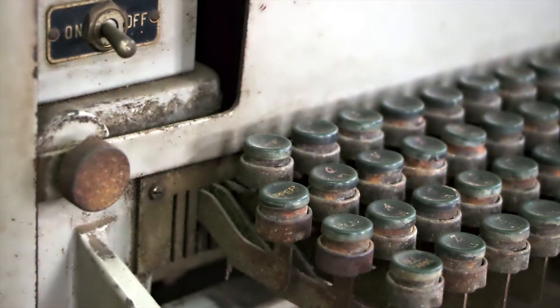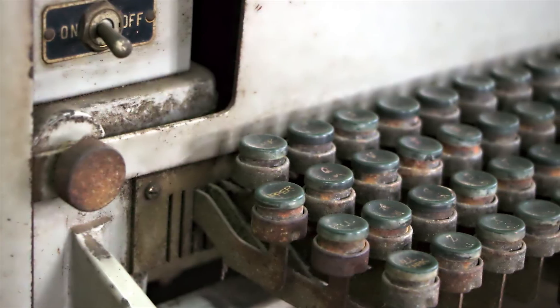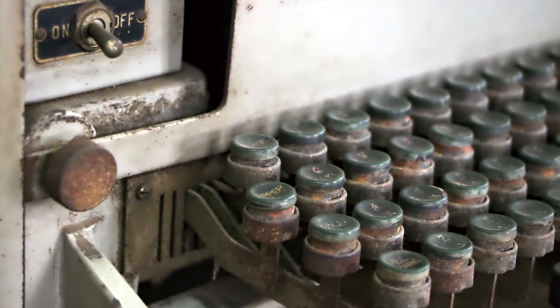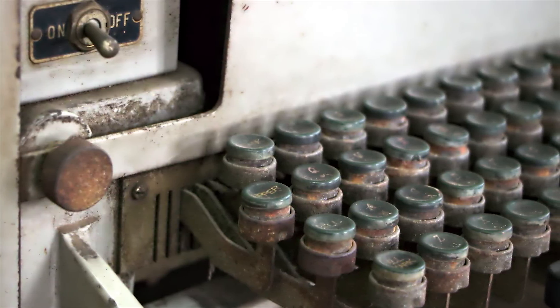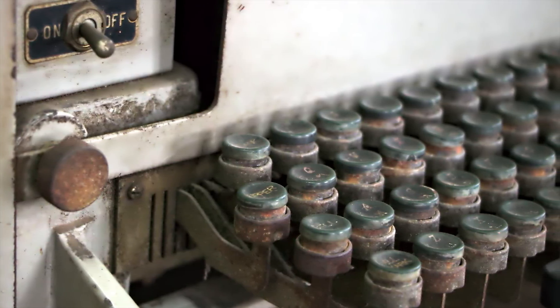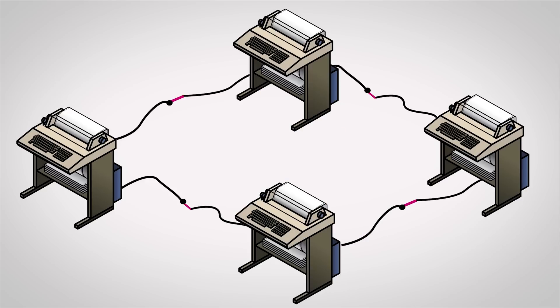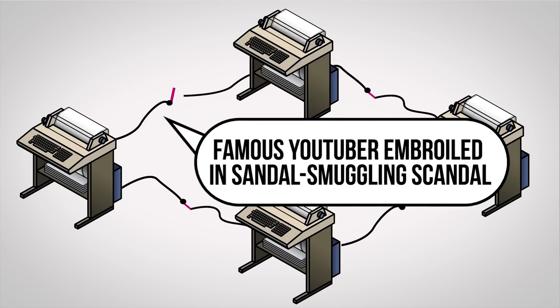Back then, if two people were communicating via teleprinter, one person could press break to break the circuit, which effectively interrupted the sender and let them know that the other end needed to transmit something. This usually happened when one news source sharing a telegraph line with others had some breaking news to report.